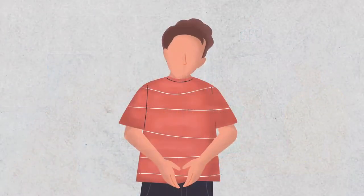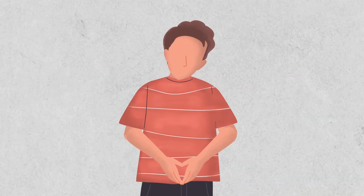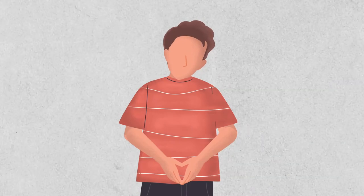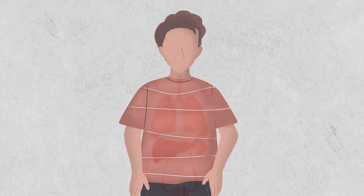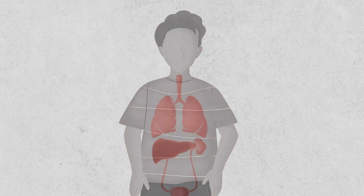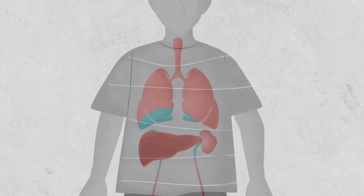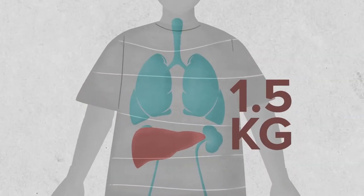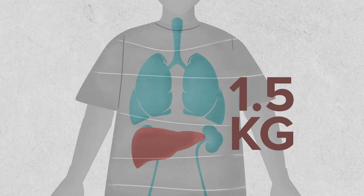The liver is a very important organ of the body. It is the largest organ inside the body, sitting in the upper right abdomen area and weighing around 1.5 kilograms in a normal adult.